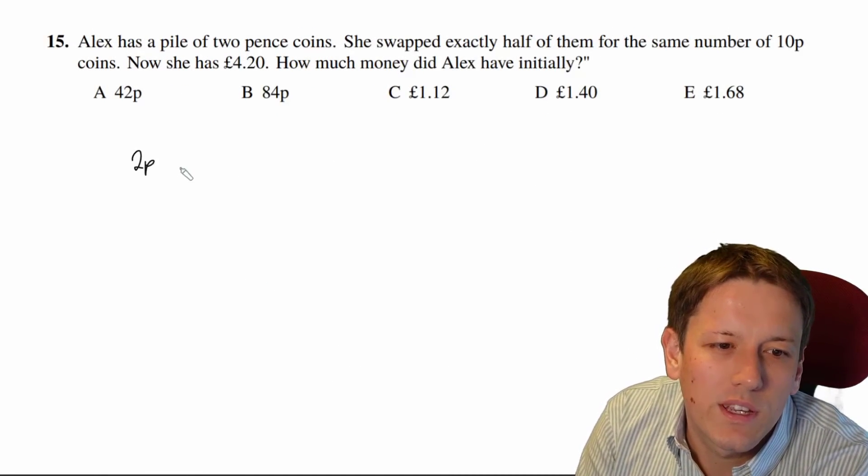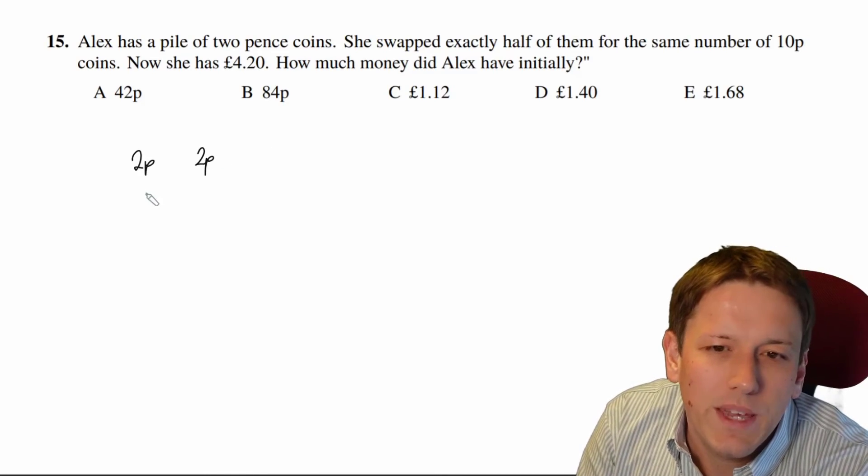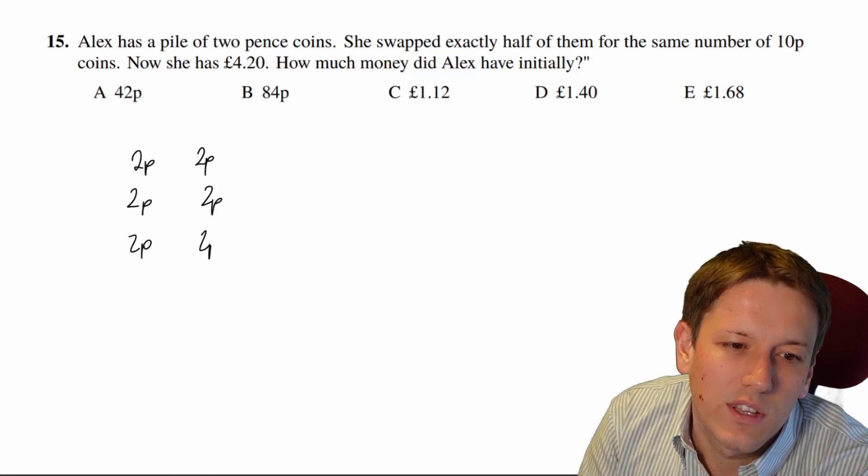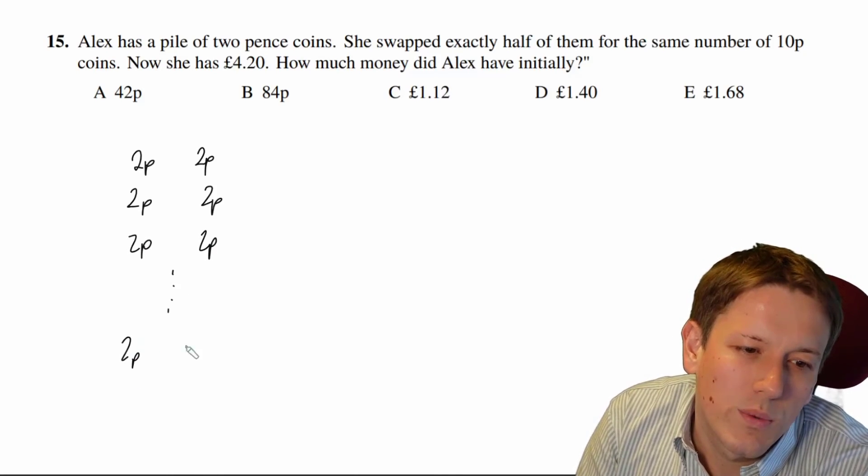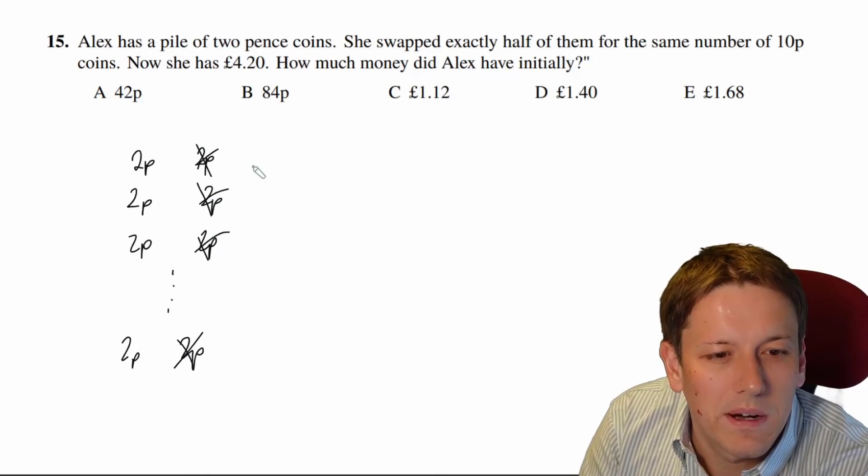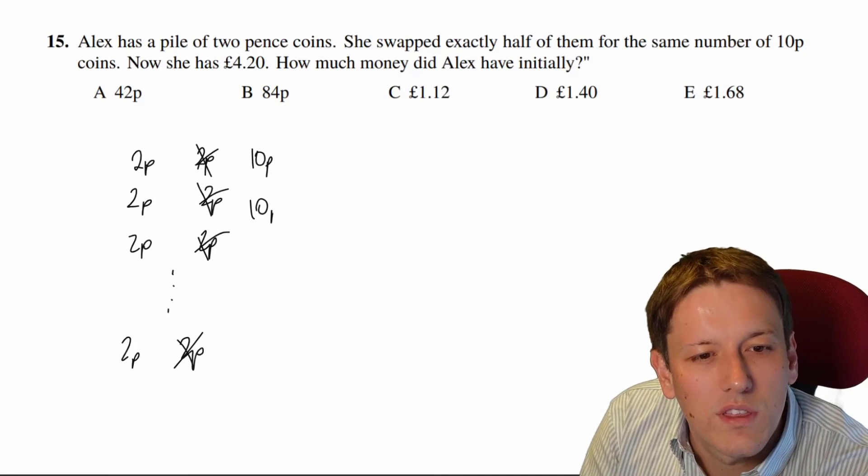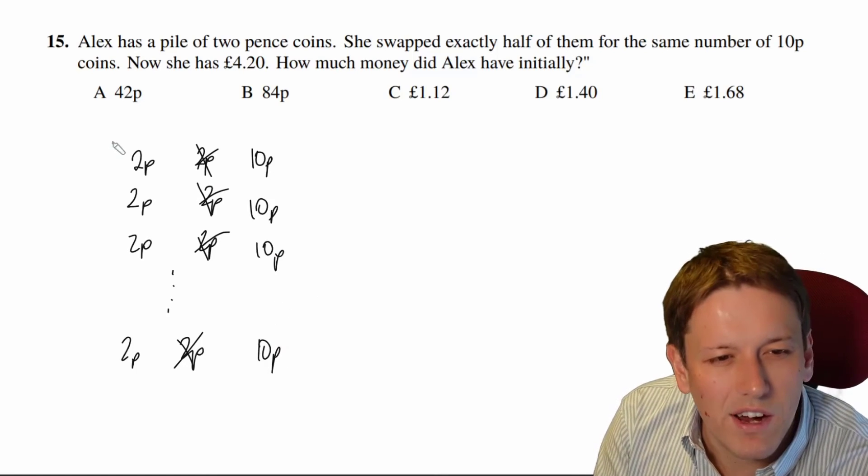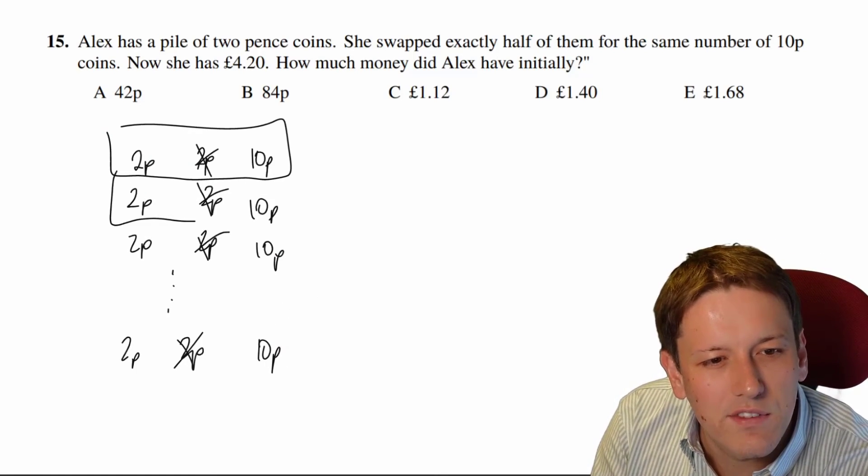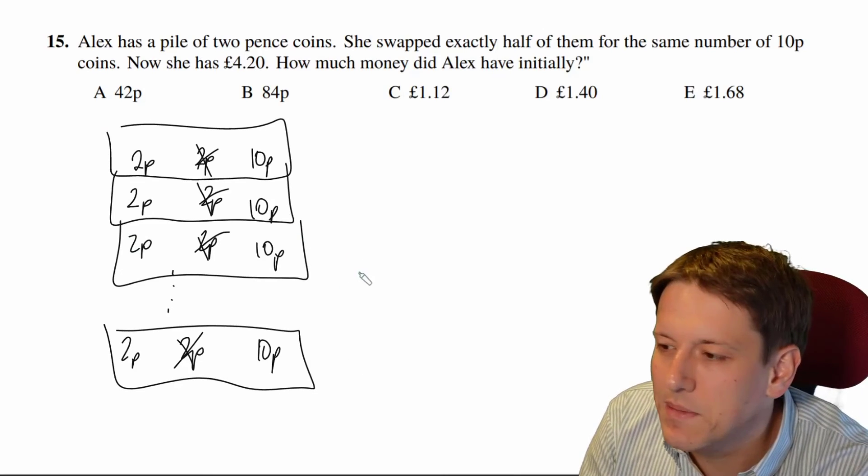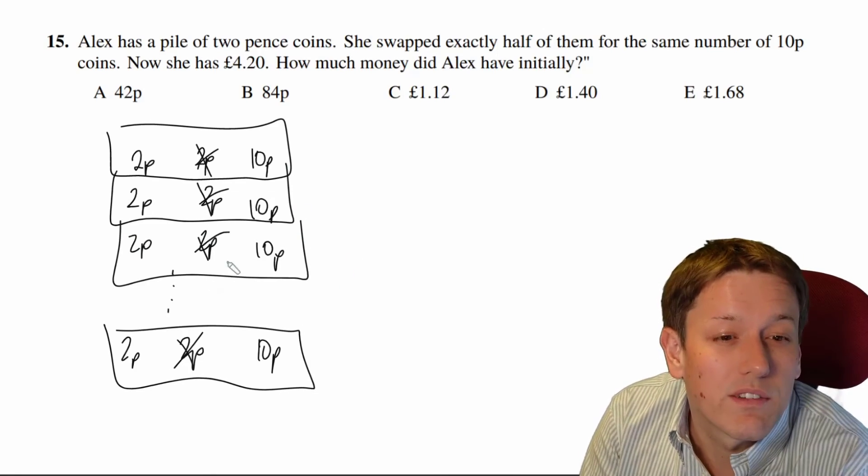So we start with this big pile of 2p coins and we know we get rid of half of them so there must be an even number of 2p coins. And what we do is we get rid of all of the 2p coins in one pile and we replace them with 10p coins. So it's natural to think oh right I've got a 2p and a 10p together, I've got another 2p and a 10p, another 2p and a 10p and I've got another 2p and a 10p and I really just want to know how many groups there are here.